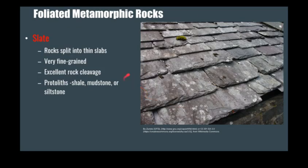Here's some slate — here's a nice slate roof in this picture. Some potential protoliths include shale, mudstone, or siltstone. This is a fine-grained metamorphic rock.